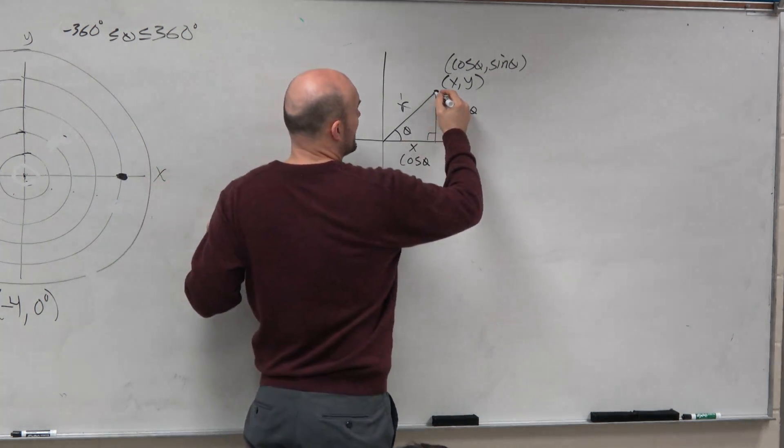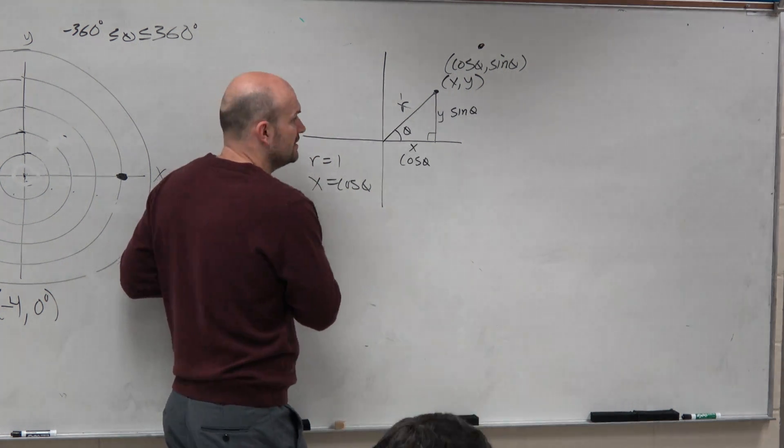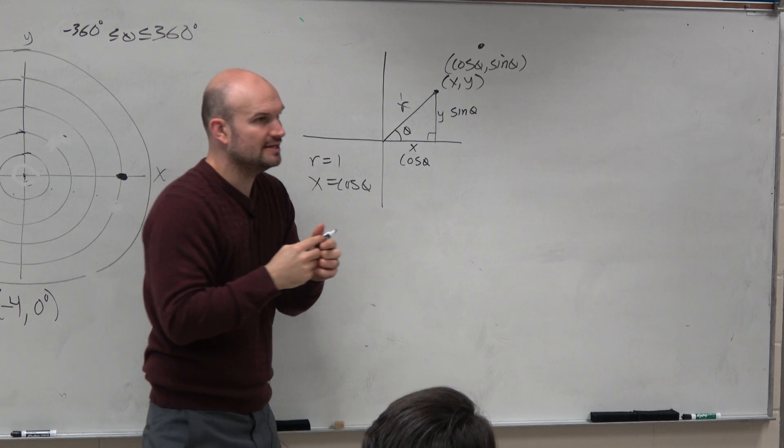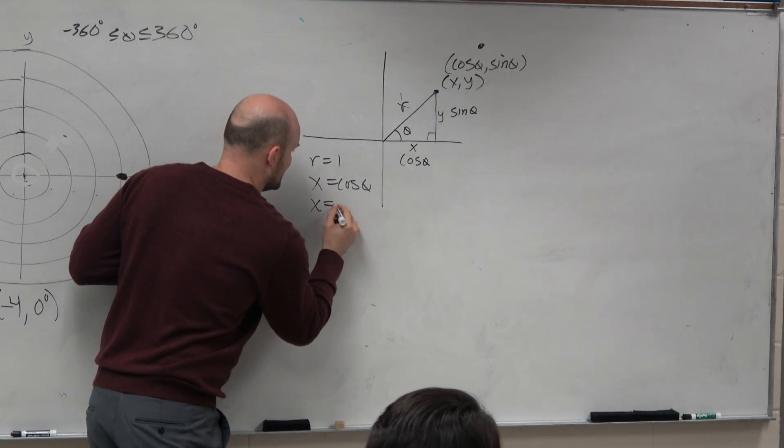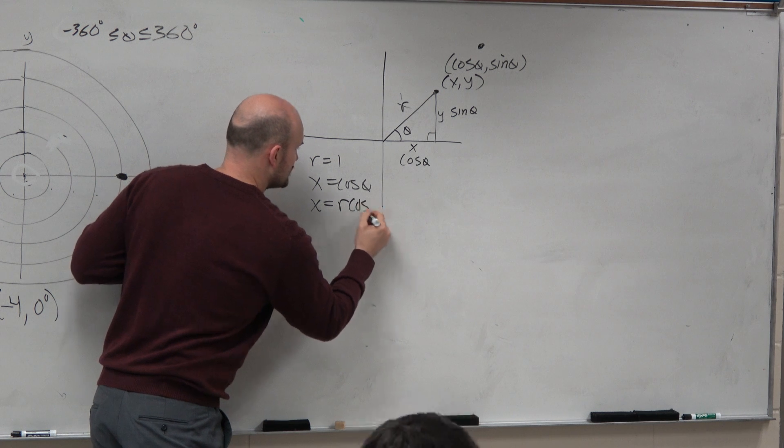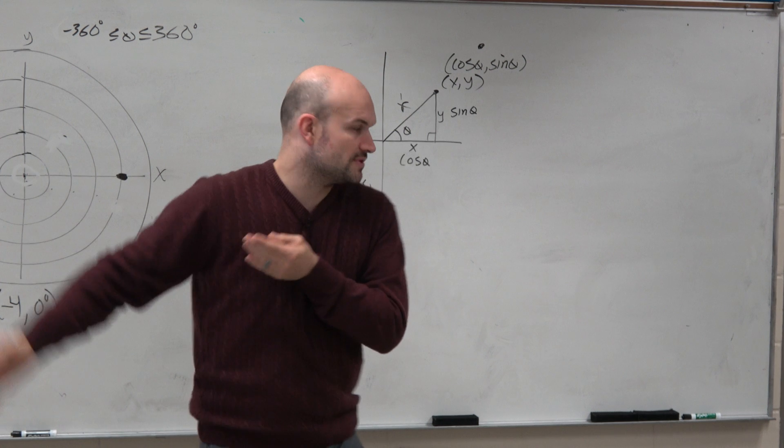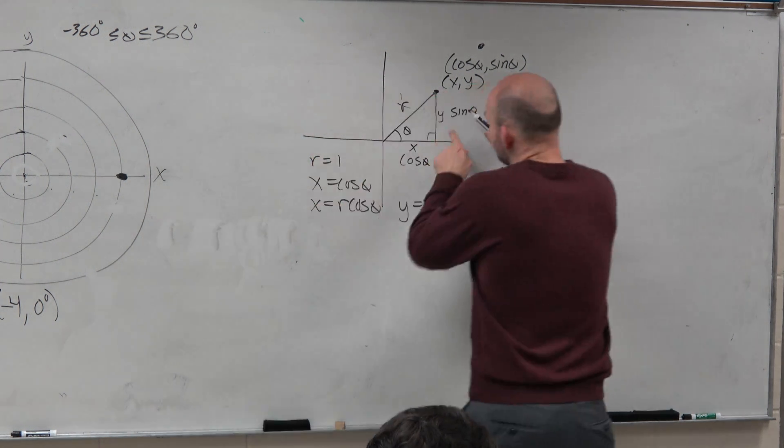Right? If you think about this, all you're going to do is just multiply by 2, or whatever your r is. So x is going to equal whatever the r is times the cosine of θ. Right? That's where that relationship comes from. And the same thing, y is going to equal r times the sine of θ. Right?